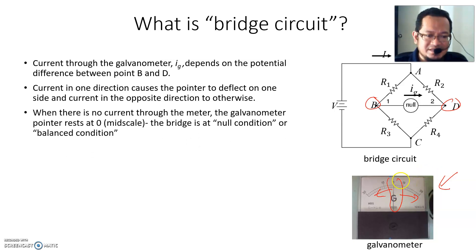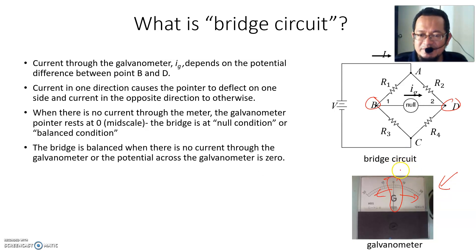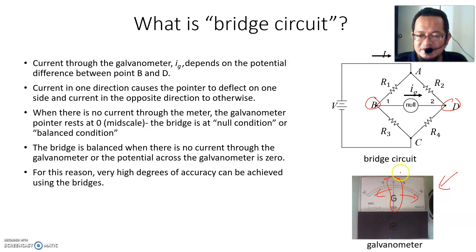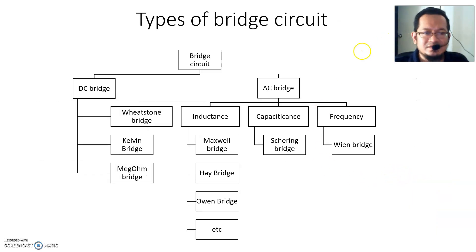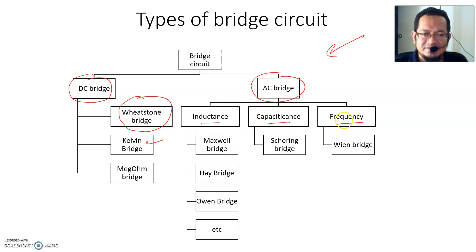The bridge is balanced when there is no current through the galvanometer — the needle points to zero. This allows a very high degree of accuracy. We are talking in this video about DC bridges, particularly the Wheatstone bridge. The Kelvin bridge will be covered in the next video. There are also AC bridge types used to measure inductance, capacitance, and frequency.